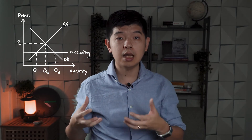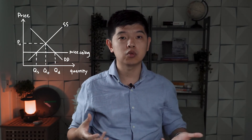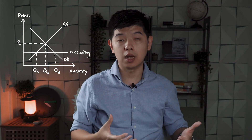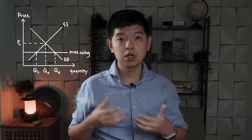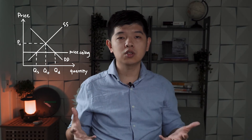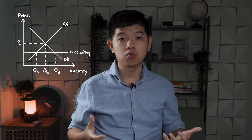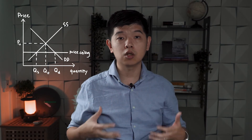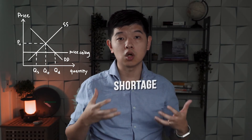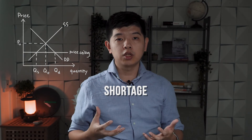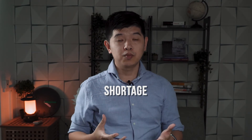But at a lower price, what do you think producers will do? They will be less willing to provide the good at a lower price. So this will cause the quantity supplied to go down from Q0 to QS, which will in the end cause a shortage of QS to QD.